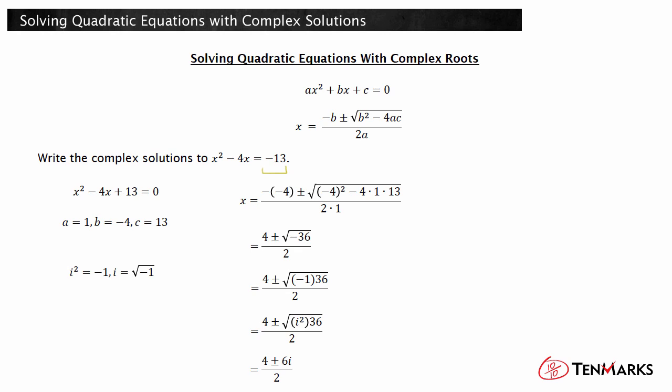Therefore, the two solutions can be written as 2 plus 3i and 2 minus 3i.